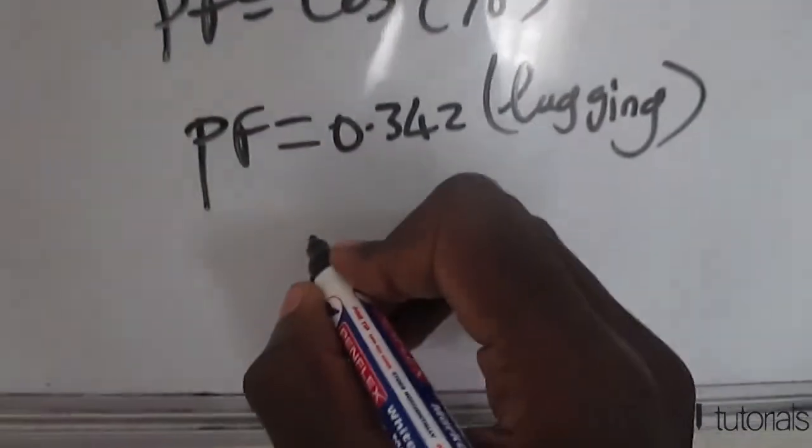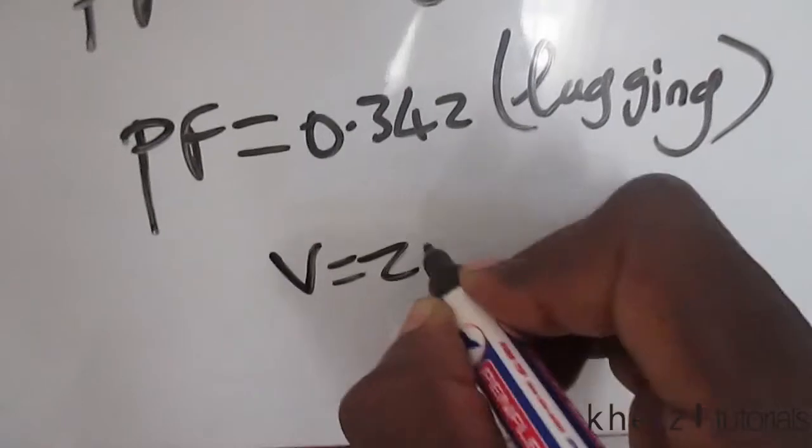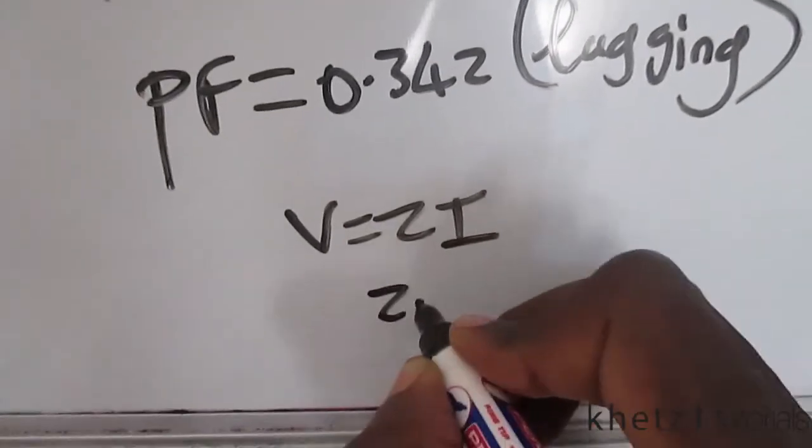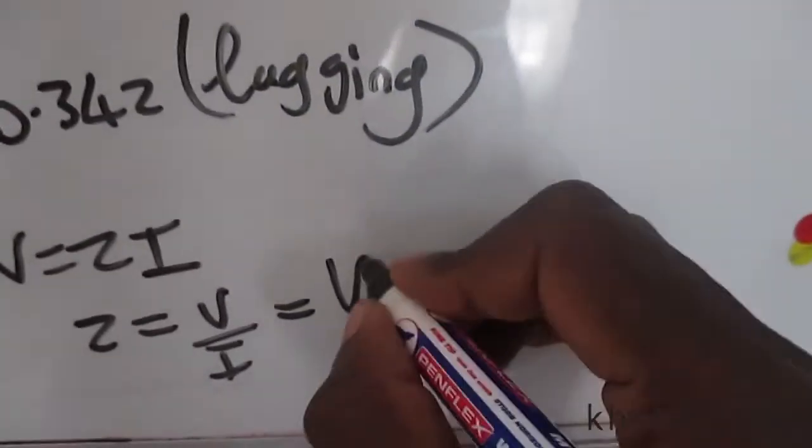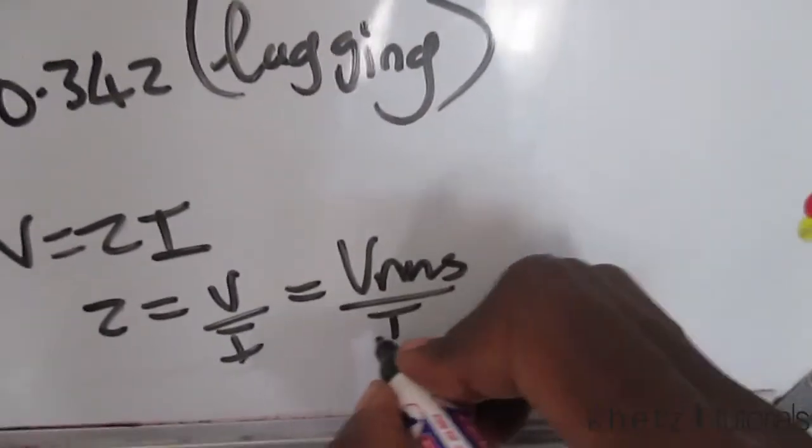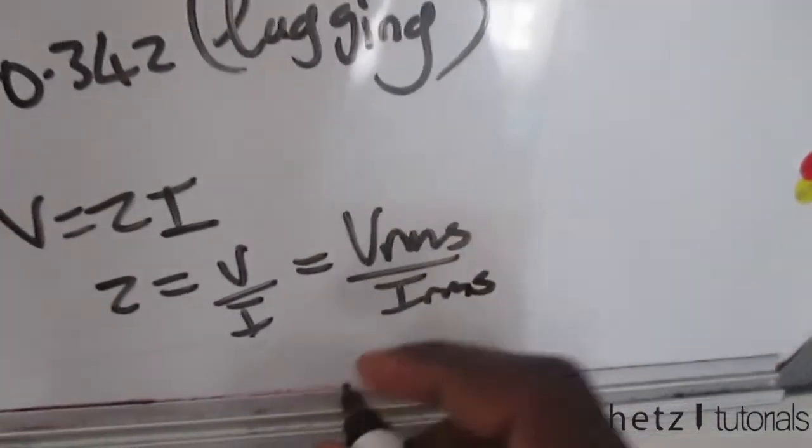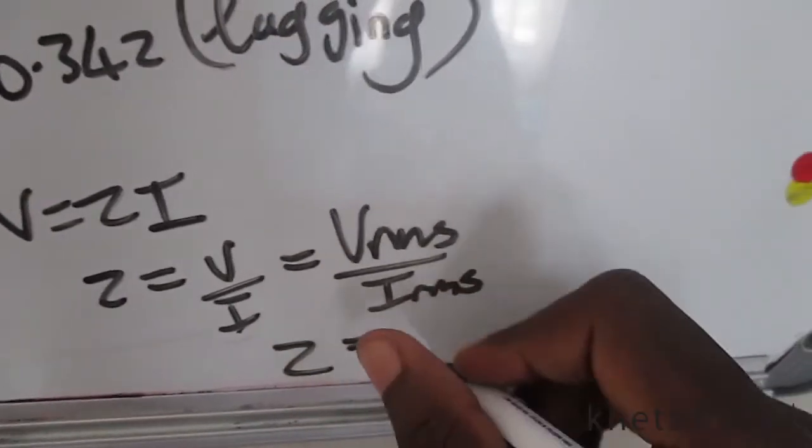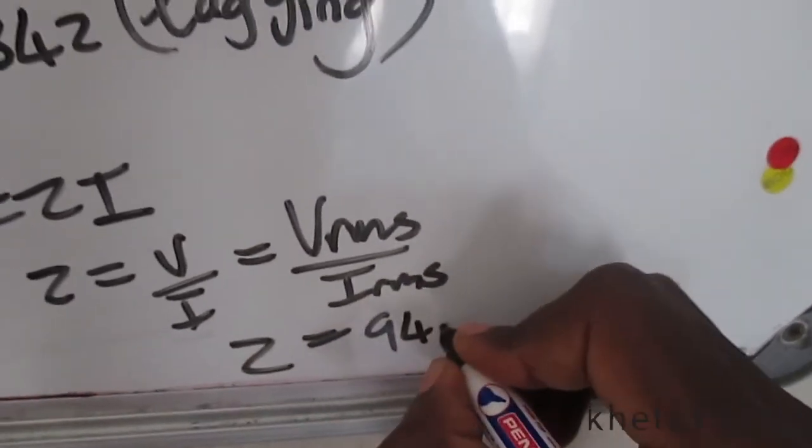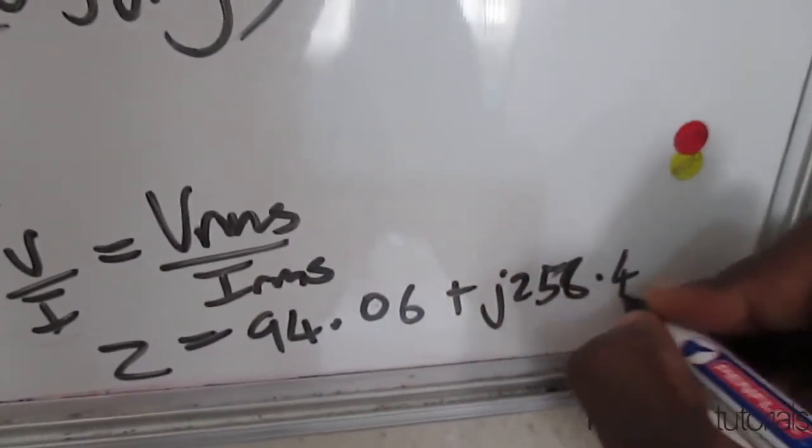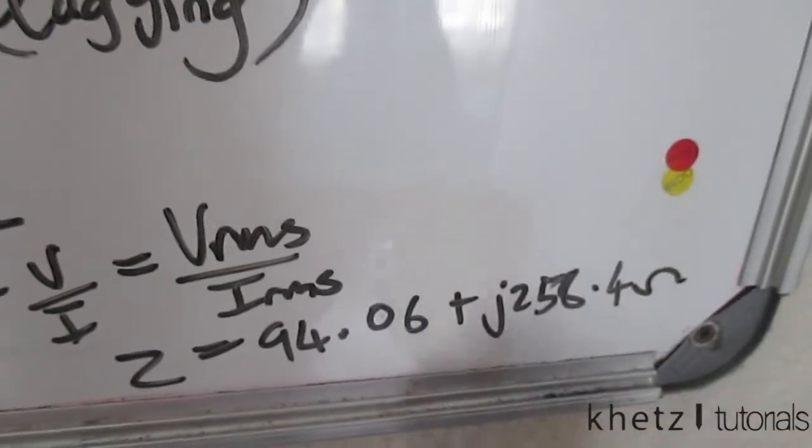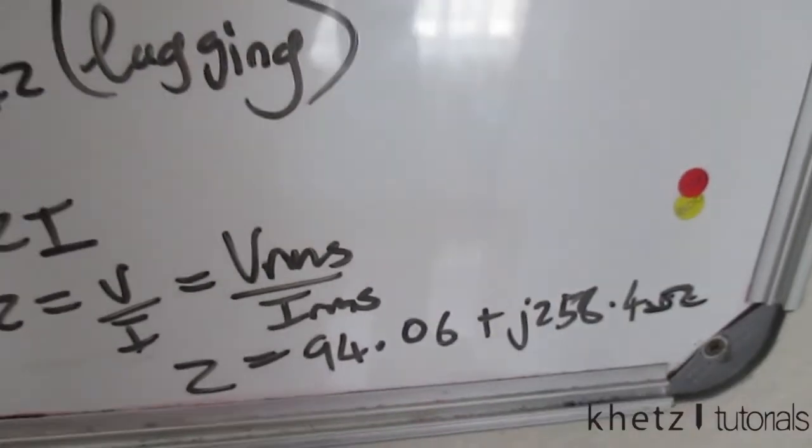Moving on to the very last section, we are asked to find the load impedance. That is quite simple - just use this formula. Z is equal to V divided by I. We're given both values, just substitute your V_rms and divide it by your I_rms, and you should get a load impedance of 94.06 plus j258.4 ohms. And that is how you basically solve this problem.